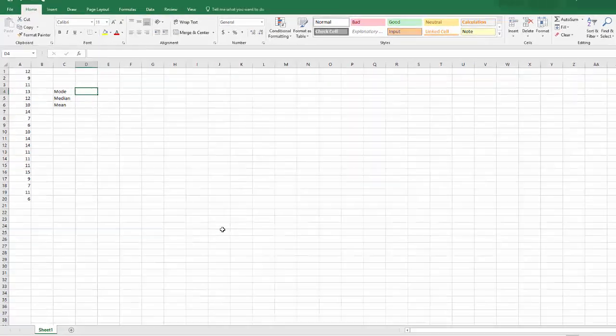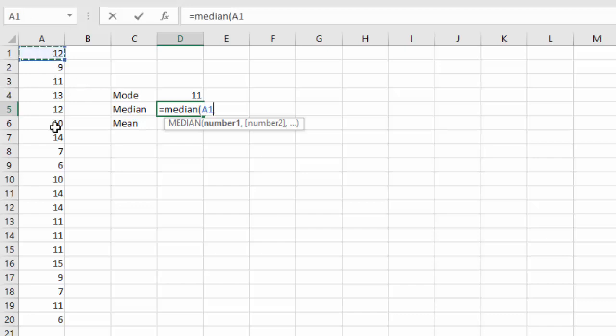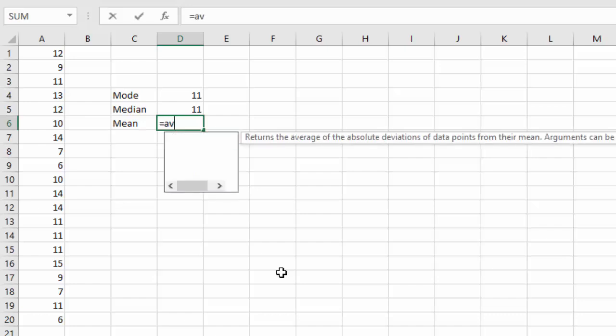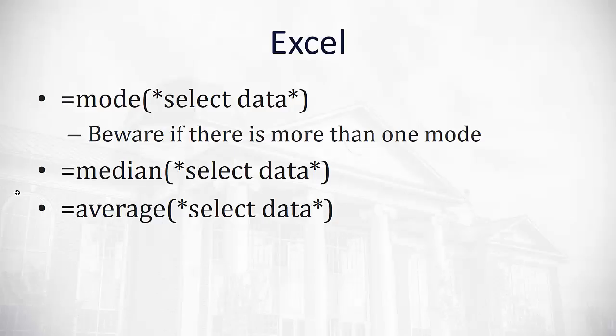Let's take a quick look at using these. I have 20 data values here that are very random all over the map. If I want to calculate the mode, we'll type equals mode, open a parenthesis, and then we select our data values. Hitting enter tells us that the mode here is 11. Similarly with median, we'll type equals median, and then select our data values. Enter gives us a median, happens to also be 11. If we want the mean, we'll hit equals average, open a parenthesis and select our data values. When we hit enter, we find the mean is about 10.65. And in this way, we can use Excel to help us calculate these various measures of center.